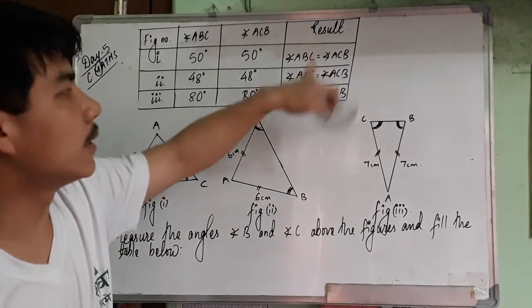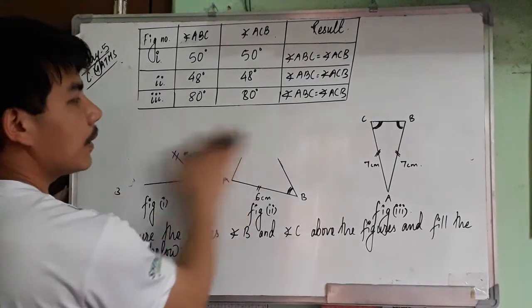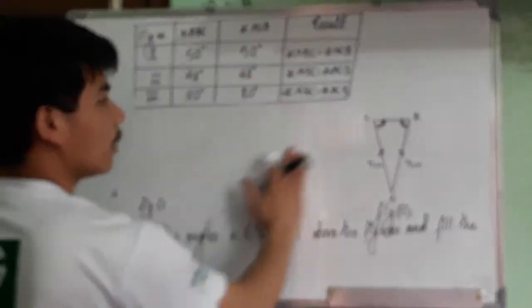So write the conclusion. From this experiment, we concluded that base angles of isosceles triangles are equal.